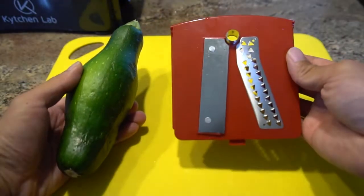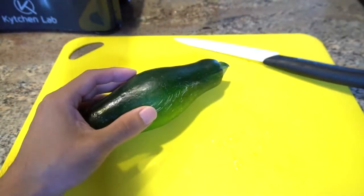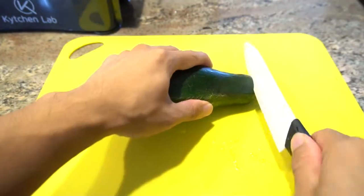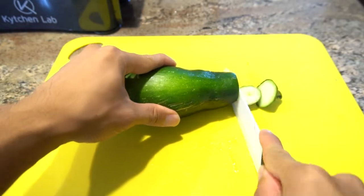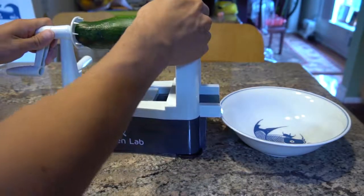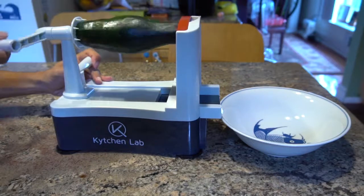Now let's try the shoestring blade with this zucchini. It's got a bit of an odd shape, but that shouldn't be a problem. I'll do the same thing and cut off both ends, then attach it to the presser plate and press it up against the blade. Now rotate the handle until I reach the end.